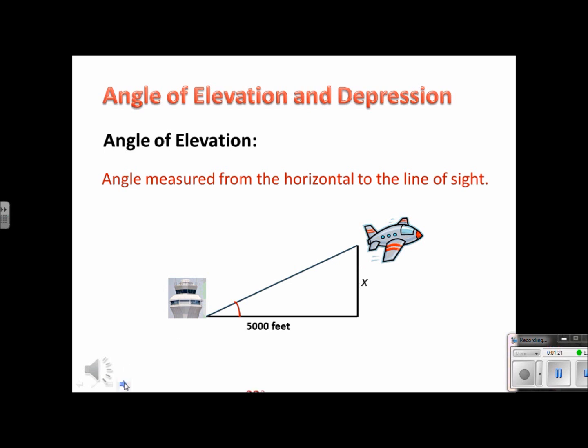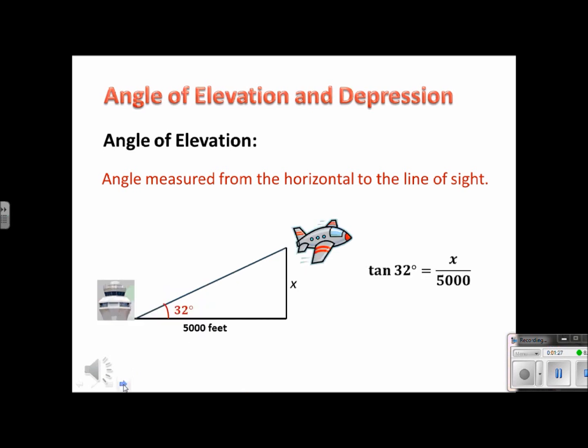Well, we can use some trig. And I forgot to mention that this angle of elevation is 32 degrees. We can use tangent because from this angle of elevation, we have an opposite and we have an adjacent. So we're going to do tangent 32 equals opposite over adjacent, which would be x over 5,000.